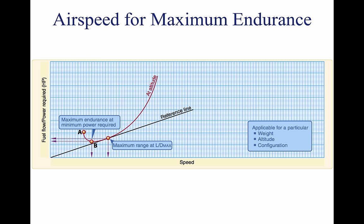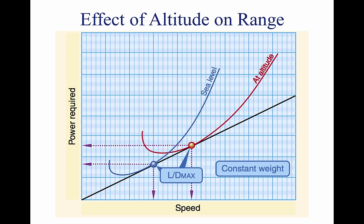If maximum endurance is desired, the flight condition must provide a minimum fuel flow. In this figure, at point A, the airspeed is low and fuel flow is high. This would occur during ground operations or when taking off and climbing. As airspeed is increased, power requirements decrease due to aerodynamic factors and fuel flow decreases to point B. This is the point of maximum endurance. Beyond this point, increases in airspeed come at a cost, as airspeed increases require additional power and fuel flow increases with additional power.